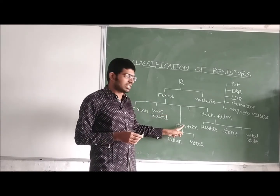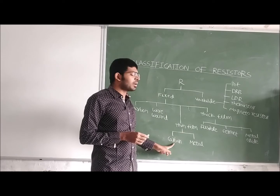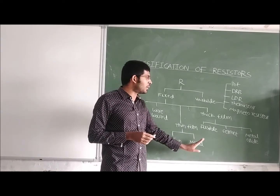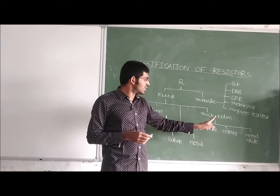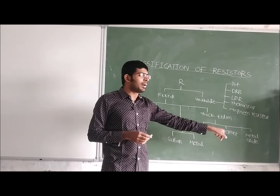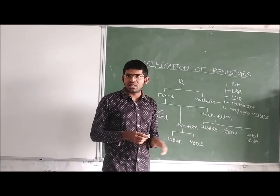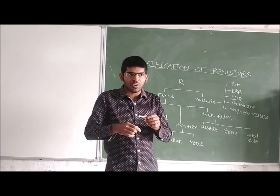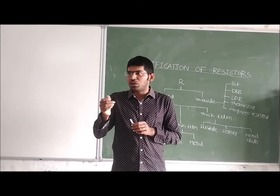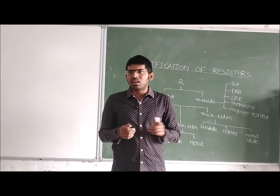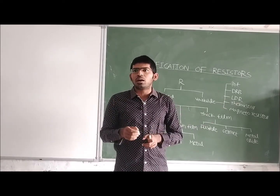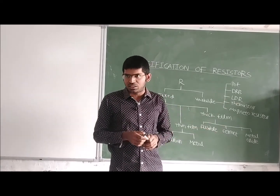We have thin film resistors — in thin film, we further classify them as carbon and metal. Thick film resistors include fusible, cermet, and metal oxide types. If we manufacture the resistance using a thin film, it is a thin film resistor. If we use a thick film in manufacturing, then it is called a thick film resistor.